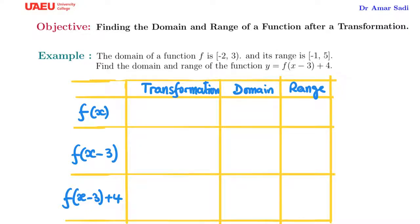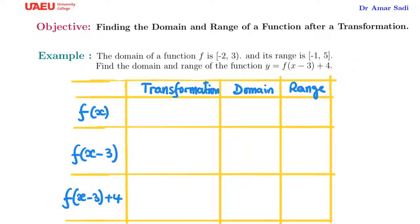Here we're going to find the domain and range of a function after some transformations. The domain of a function f is the interval [-2, 3] and its range is [-1, 5]. Find the domain and the range of the function y = f(x - 3) + 4.